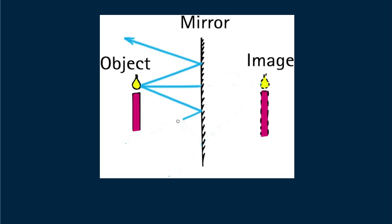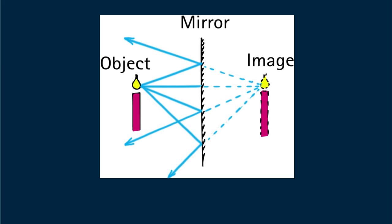Rays of light radiate from the flame in all directions. I'm showing only four of the infinite number of rays leaving one of the infinite number of points on the candle. These rays diverge from the candle flame and encounter the mirror, where they are reflected at angles equal to the angles of incidence. The rays diverge from the mirror and appear to emanate from a particular point behind the mirror. An observer sees an image of the flame at this point. The light rays don't actually originate from this point, so the image is called a virtual image.